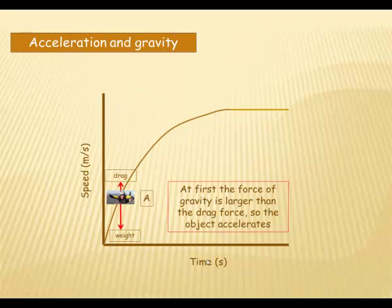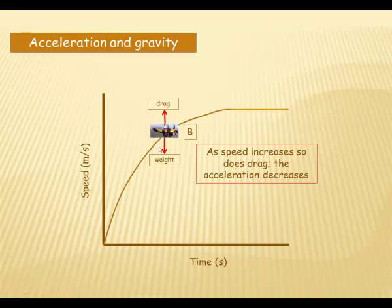Well, this is the axis of time, here we've got speed. Now, as she jumps out of the plane, her weight, that is gravity, is larger than the drag. So she will accelerate. She can change this by actually altering her body shape, but that's for another lesson.